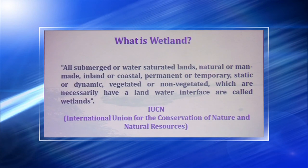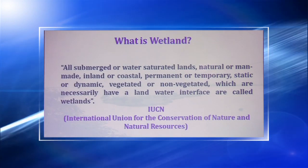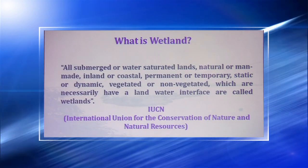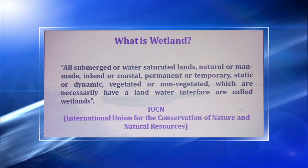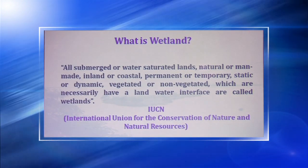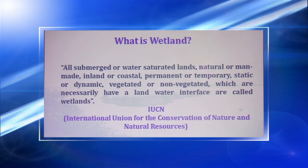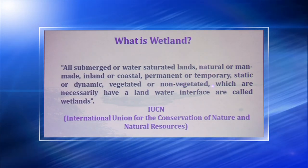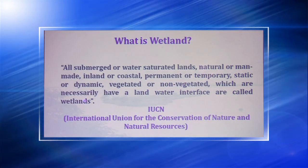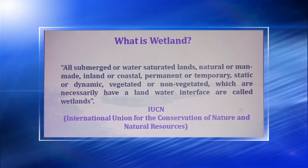What are wetlands? As per IUCN — the International Union for the Conservation of Nature and Nature Resources — all submerged or water-saturated lands, natural or man-made, inland or coastal, permanent or temporary, static or dynamic, vegetated or non-vegetated, which necessarily have a land-water interface are called wetlands.